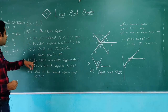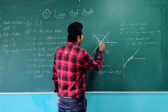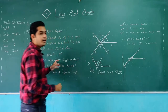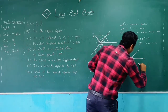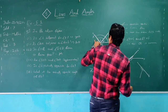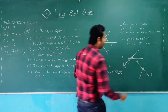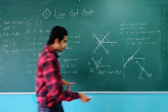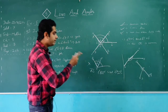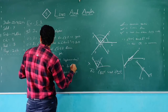Sub-question 4: Are BOD and DOA supplementary? Yes, of course. AO and OB form a straight line. On this straight line, two angles form — BOD and DOA — and their sum is 180 degrees. This is a linear pair, so yes, they are supplementary.